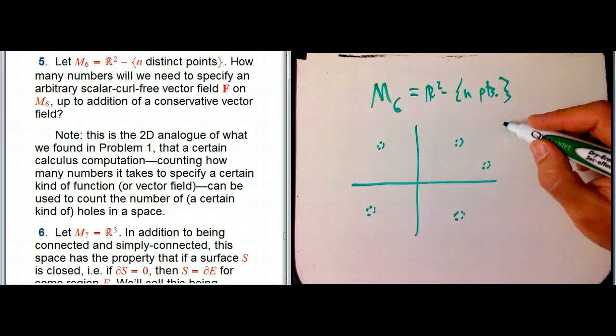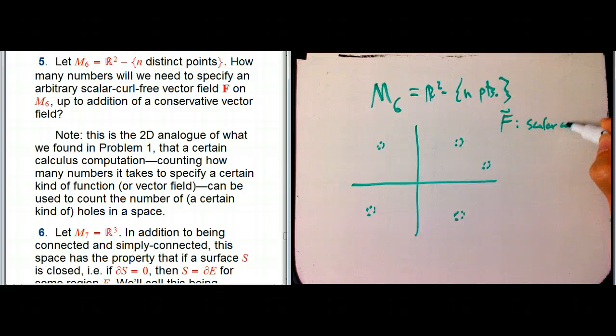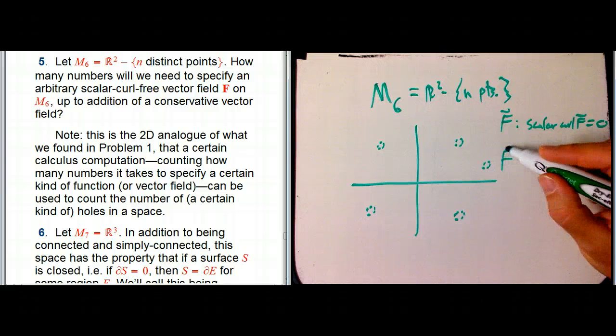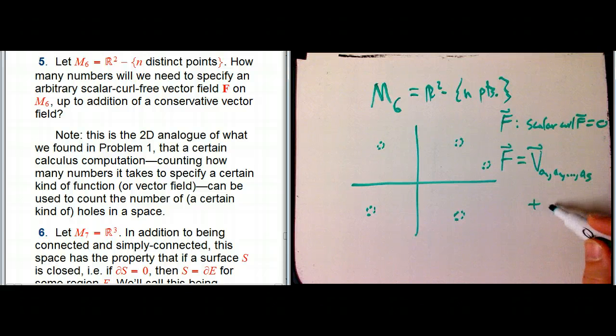And the question is, I have, in vector calc language, I have F with scalar curl F equals zero. How complicated can that be? And the claim is that F is going to be equal to some vortex A₁, A₂, up through A₅ plus the gradient of a function.